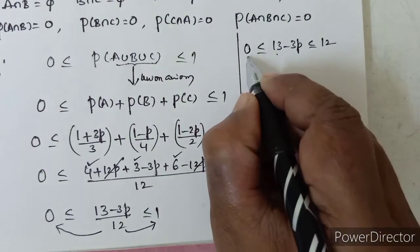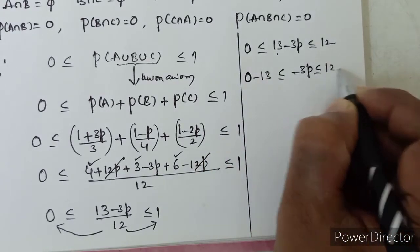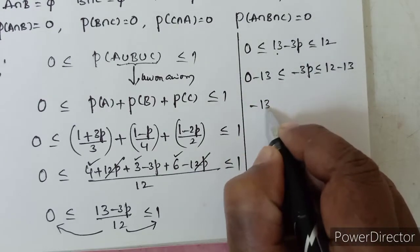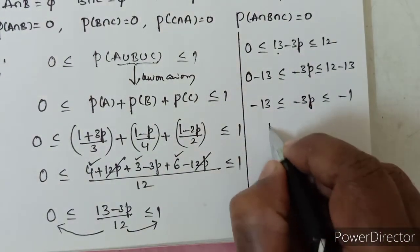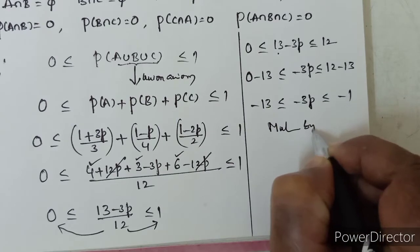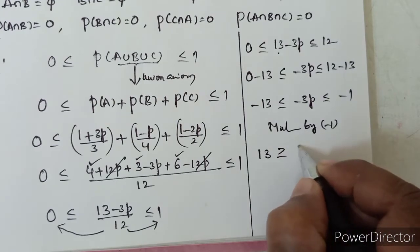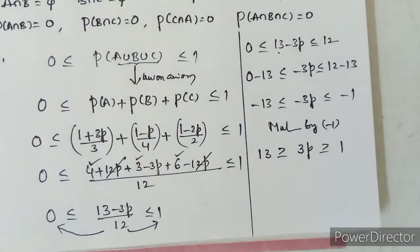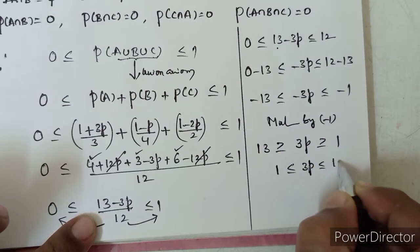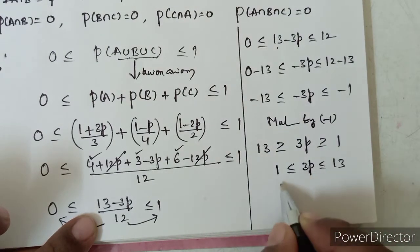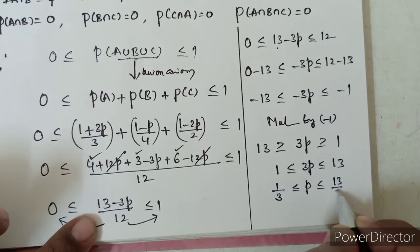Bringing 13 to both sides: 0 - 13 ≤ -3p ≤ 12 - 13, so -13 ≤ -3p ≤ -1. Multiplying throughout by -1: 13 ≥ 3p ≥ 1. Writing in reverse order: 1 ≤ 3p ≤ 13. Dividing by 3: 1/3 ≤ p ≤ 13/3. This is equation 4.